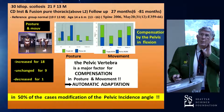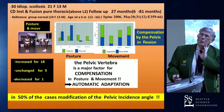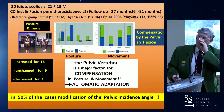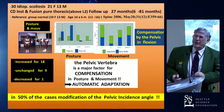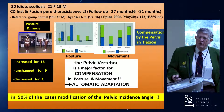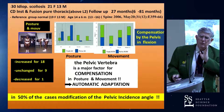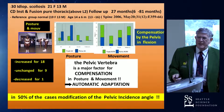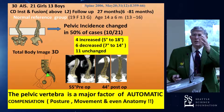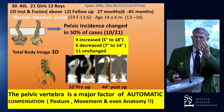We published a long time ago, in SPINE 2006, this study demonstrating clearly that it is very important — the function of the pelvis to compensate in posture and movement. The pelvic vertebra makes an automatic adaptation. In such cases, when we took thoracic fusion for idiopathic scoliosis, we see in 50% of cases a modification of the pelvic incidence angle — sometimes increase, sometimes decrease — demonstrating that it is a major factor for automatic compensation in posture, movement, and even anatomy.